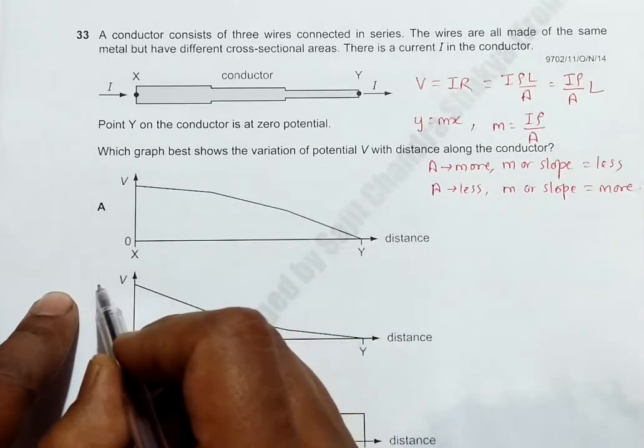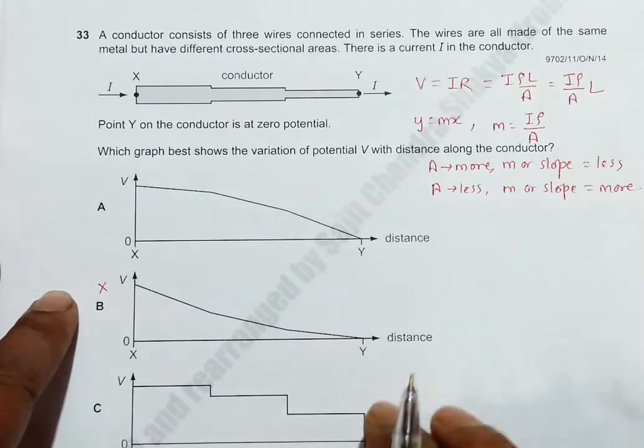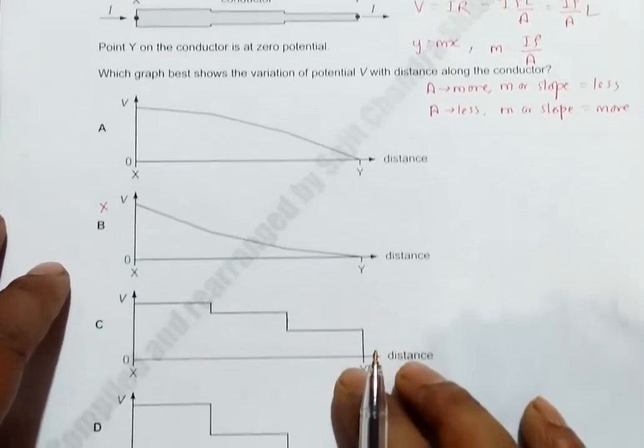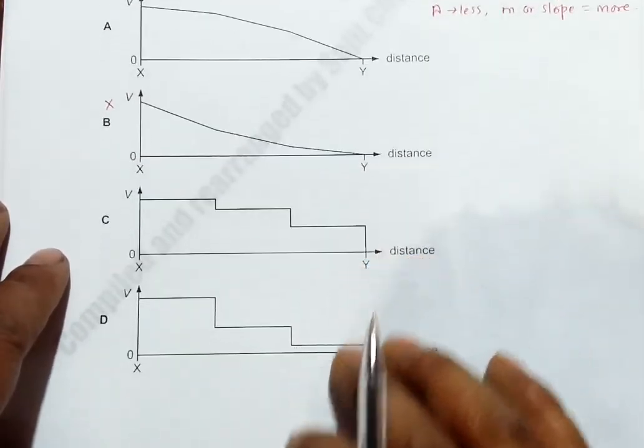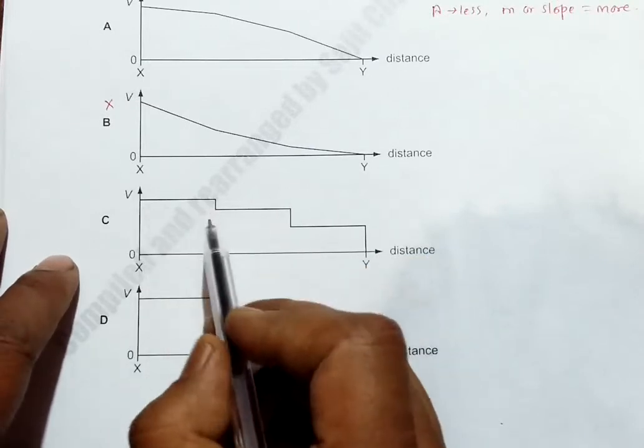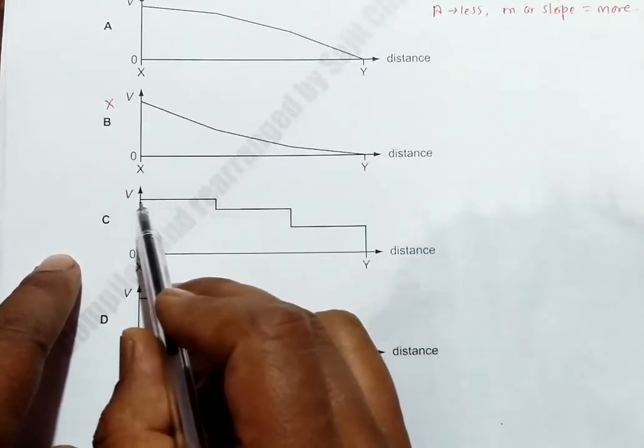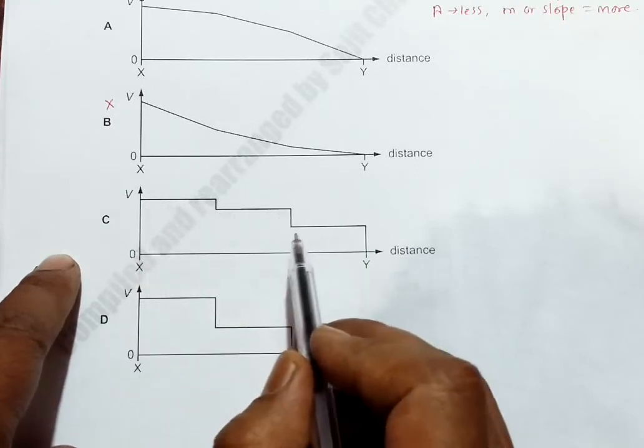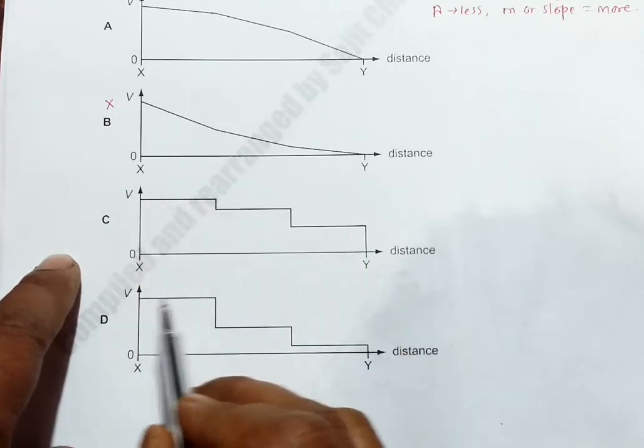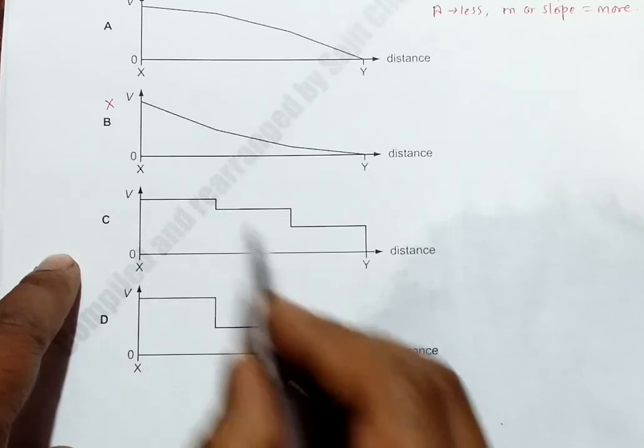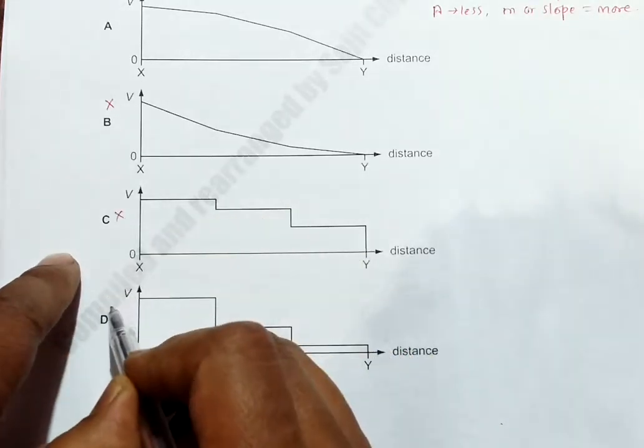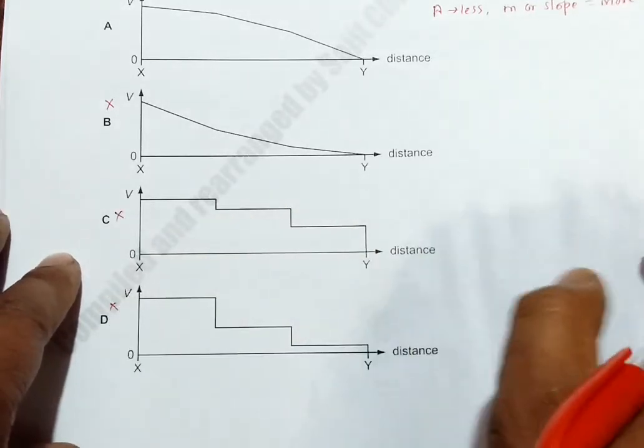In choices C and D, the slopes are same throughout. The values of V are different, but slopes are same throughout - same throughout here, same throughout here. So both of these choices are wrong.